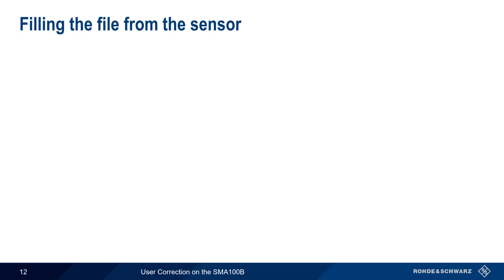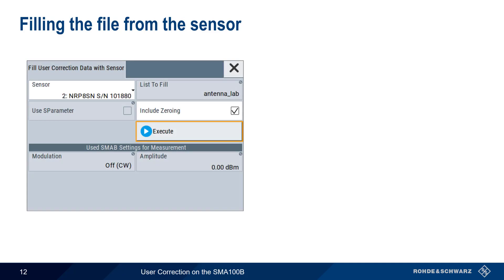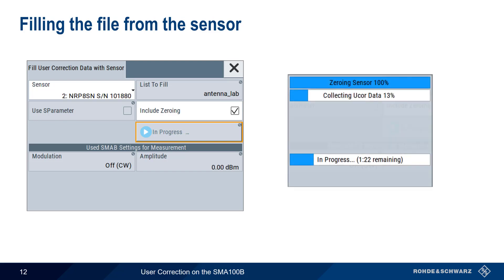To fill the user correction file from a sensor, we first choose the sensor we want to use, and whether or not we want the sensor zeroed before calculating the corrections. After pressing Execute, the data collection process begins, and usually takes several minutes, depending on the number of steps. When the process is completed, we can return to the main User Correction screen.